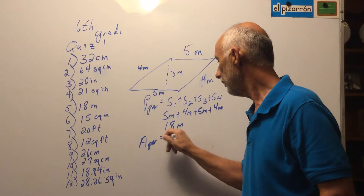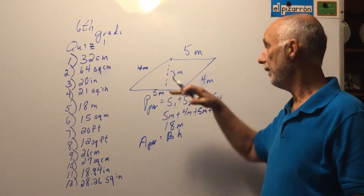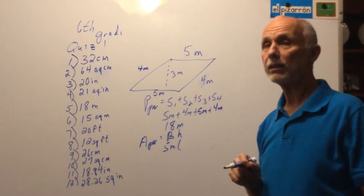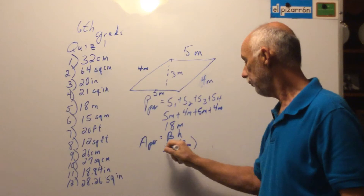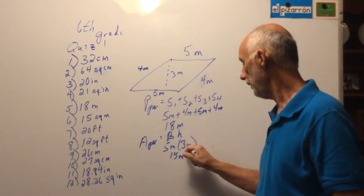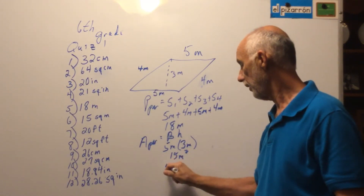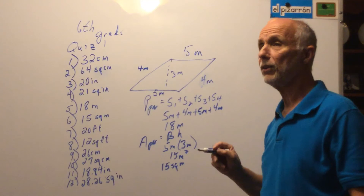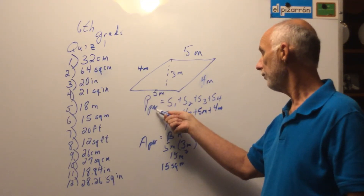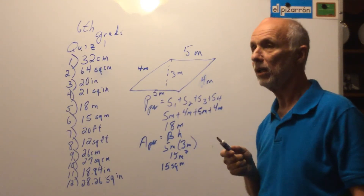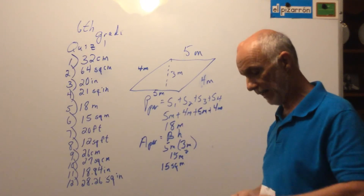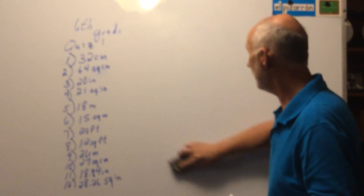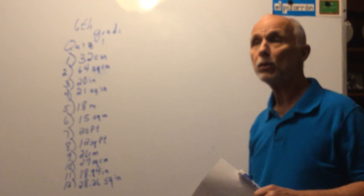The area of a parallelogram equals base times height. The base is the bottom it sits on — five meters — and the height is the imaginary dotted line straight down, which is three meters. Five times three is 15, and meters times meters is meters squared, so the answer is 15 square meters. Formula, replace the variable with its value, work it out.